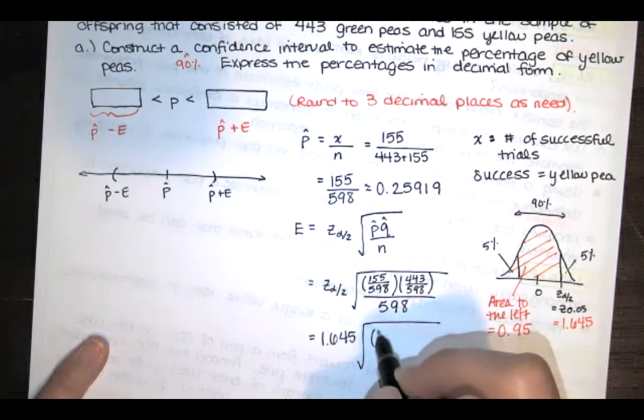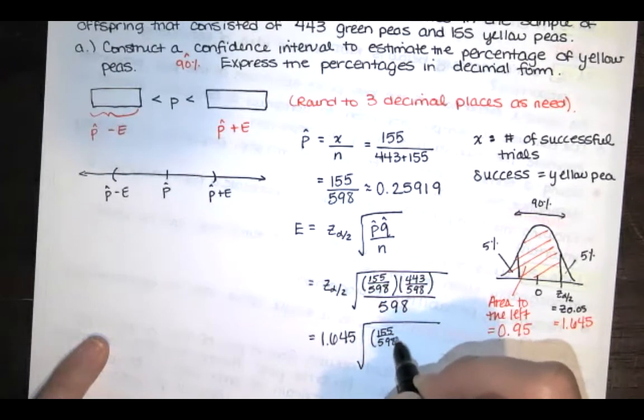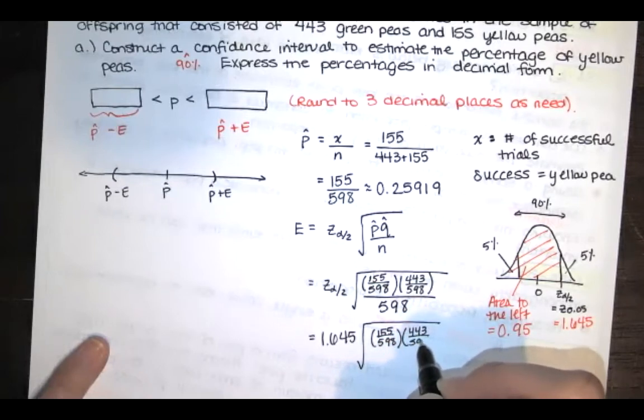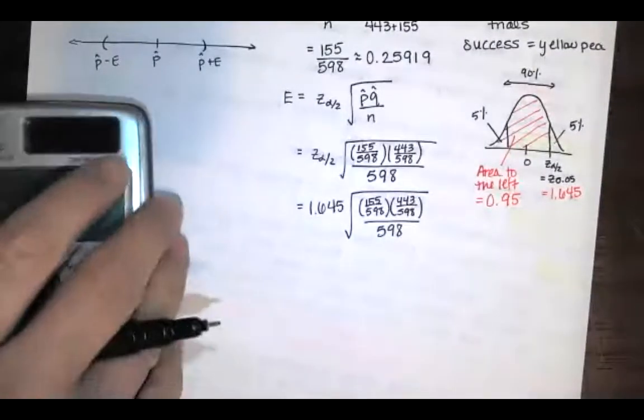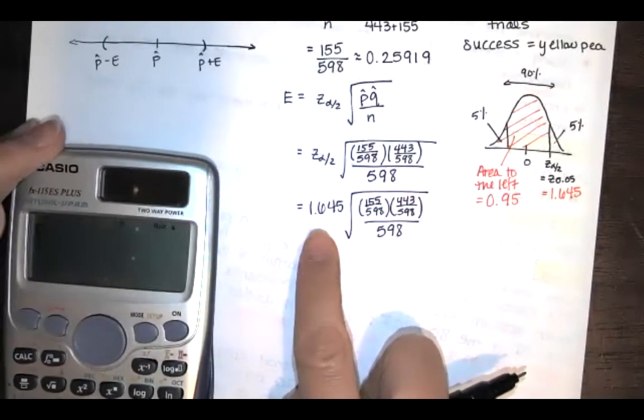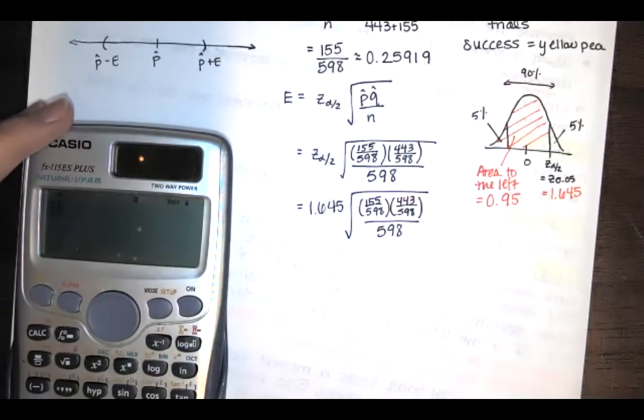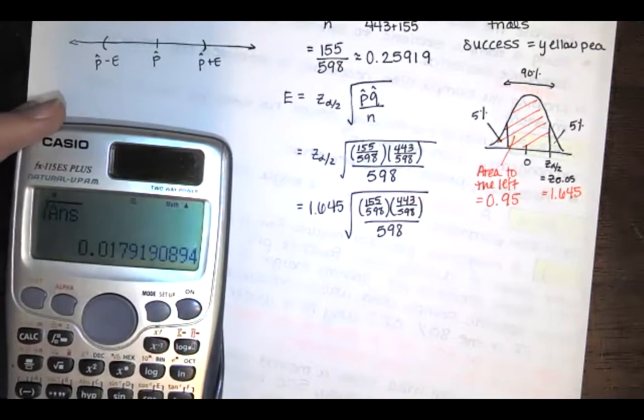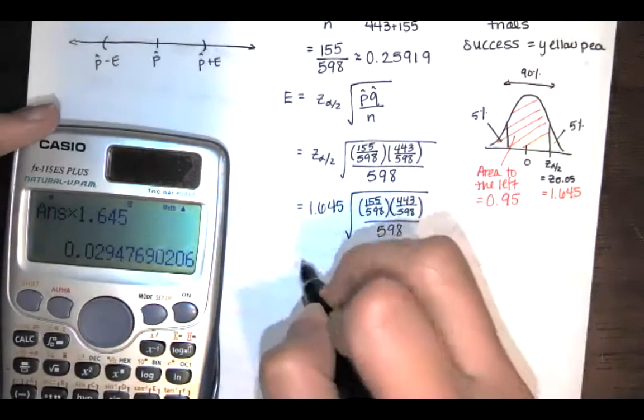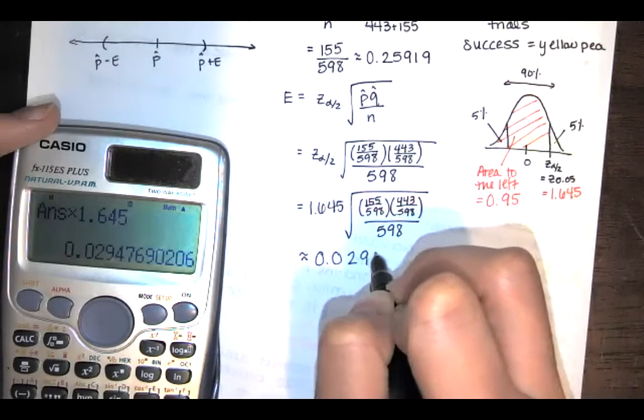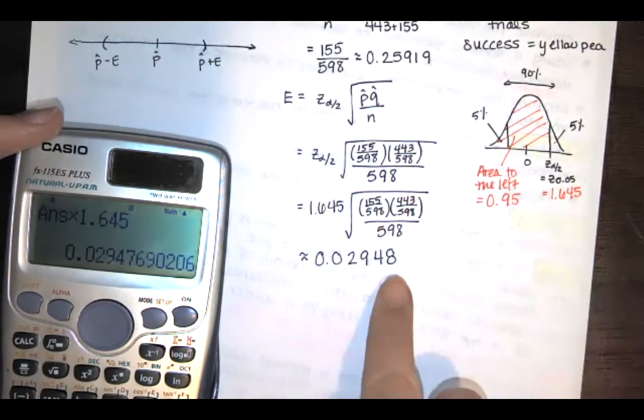And then I'm multiplying by this p-hat times q-hat all divided by the sample size. And then you take the square root of that to get the error—well, take the square root of that and multiply by that critical z value to get the error. So we're going to have 155 divided by 598 times 443 divided by 598 divided by 598, then square root of the answer. And then I take that and multiply by 1.645. And so I get an error of approximately 0.02948 if I round out to five decimal places.